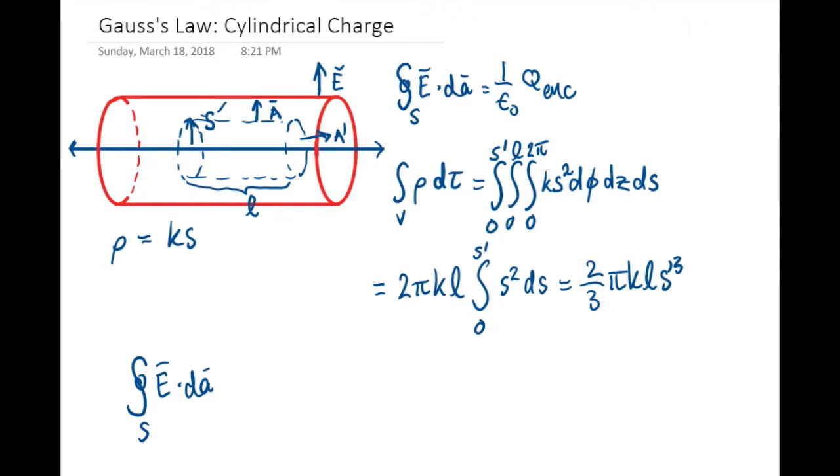On the sides it will be parallel, which means we can get rid of the dot product and say it's equal to the magnitude of the electric field times the magnitude of the area vector. Instead of being on a closed surface, it's just going to be on the curved surface, which I'm going to call c for curve.